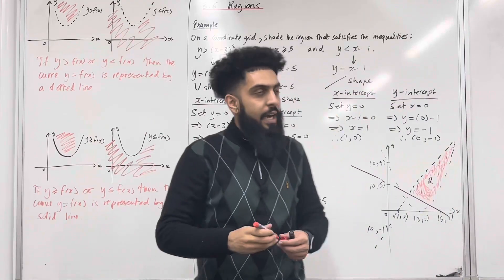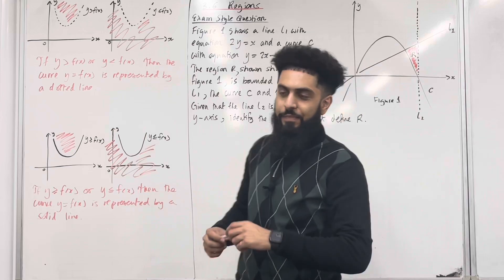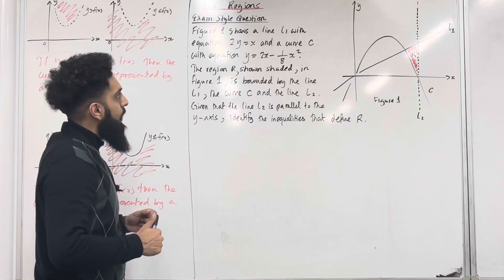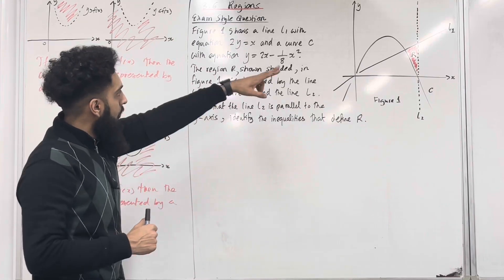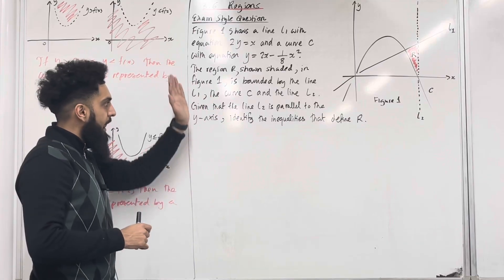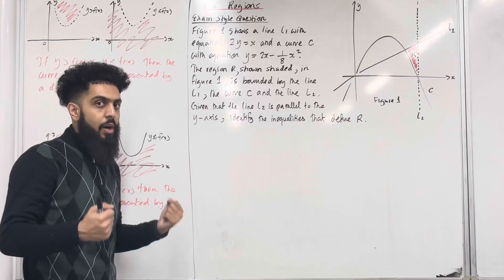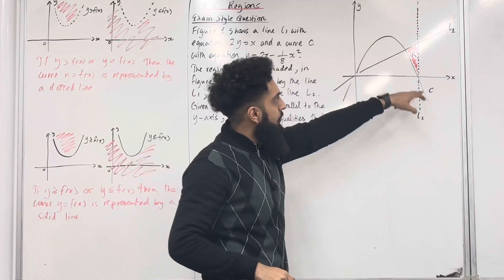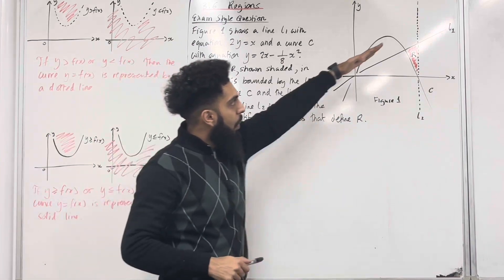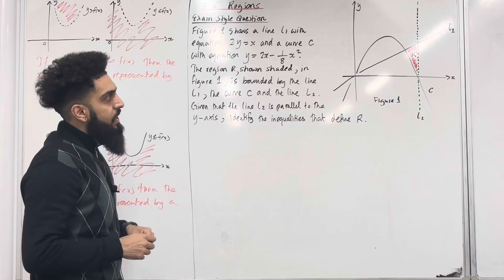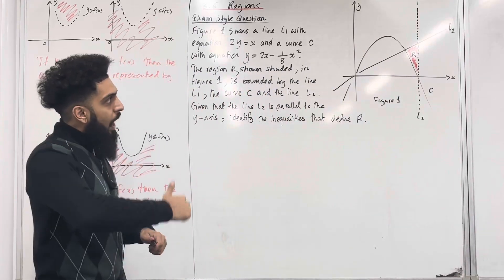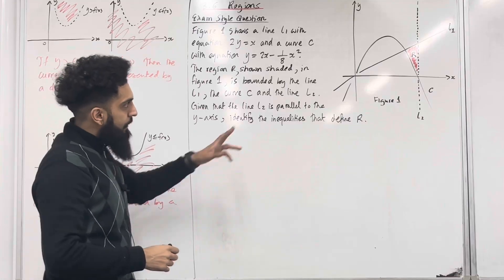So I can shade it in a little bit more to make it clear — this here is my region R. These three inequalities are satisfied by shading this particular region, and that there completes my example. Here is an exam style question. Figure 1 shows a line L1 with equation 2y equal to x and a curve C with equation y equal to 2x minus 1 over 8x squared. The region R, shown shaded in figure 1, is bounded by the line L1, the curve C, and the line L2. Given that the line L2 is parallel to the y-axis, identify the inequalities that define R. The quadratic is represented by a solid curve, so in our inequality we must include the equal. The line L1 is represented by a solid line, so in our inequality for L1 we must include the equal. The line L2 is represented by a dotted line, so in our inequality for L2 we must not include the equal.